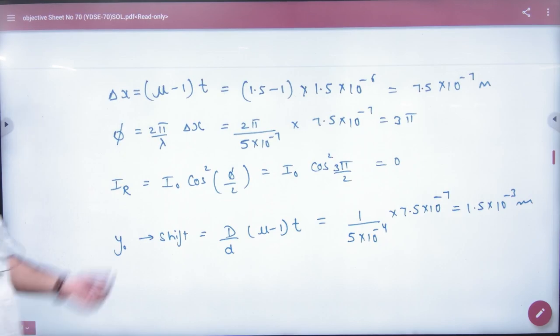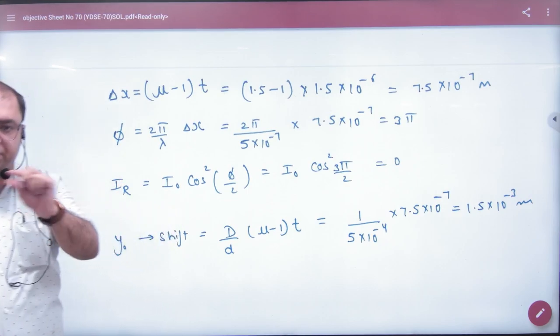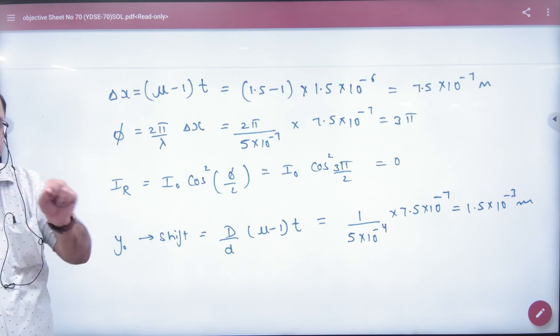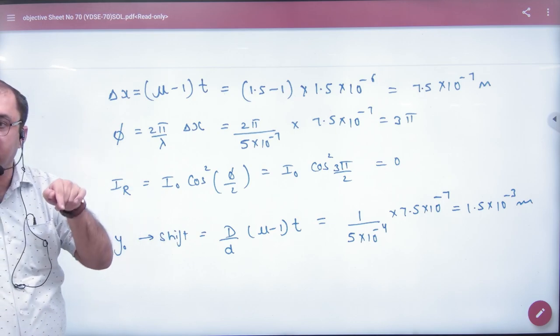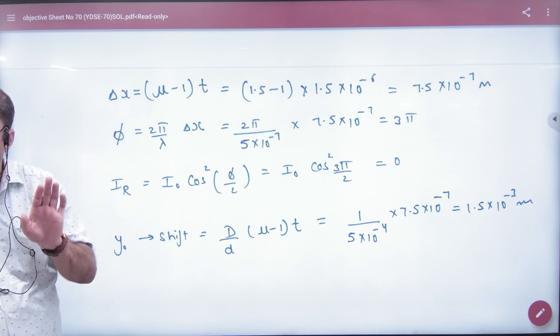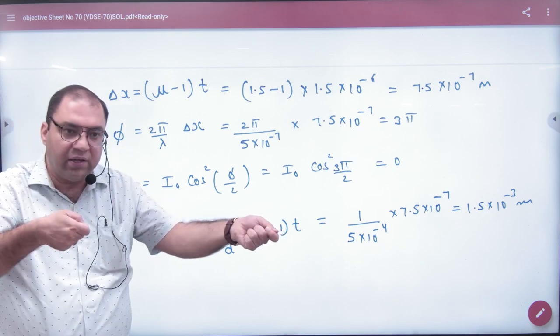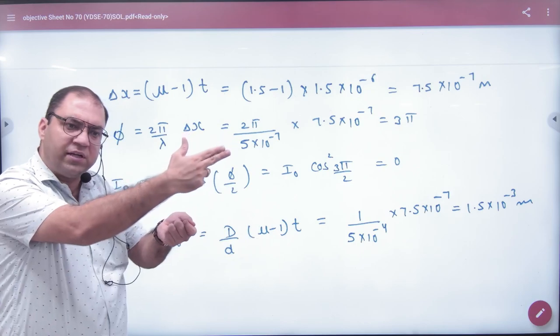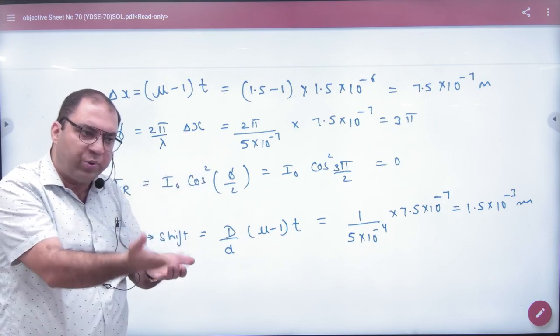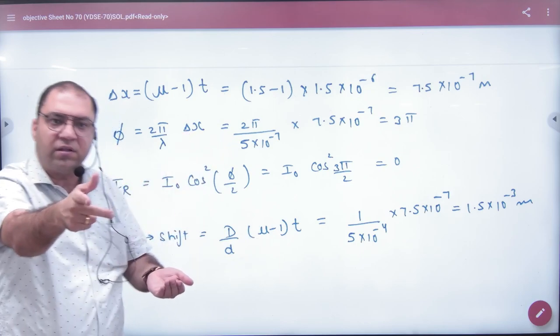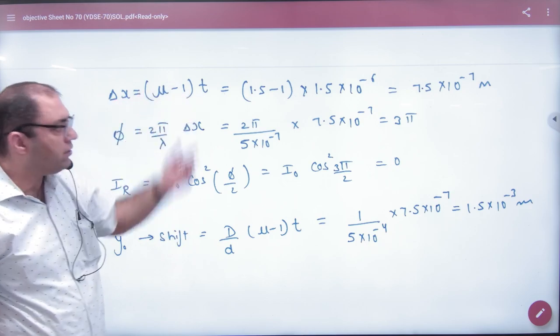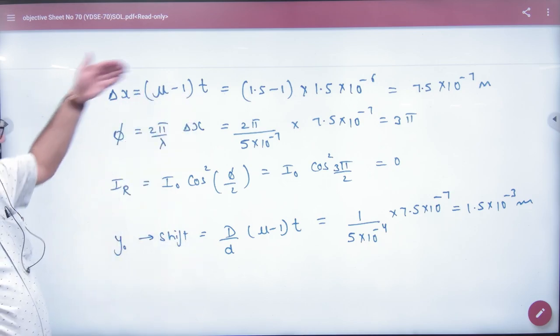So I know that the Δx is shift, path difference. After putting slab, what will happen? Optical path, μ into t cover. That's how it had to cover, t cover. Glass slab's thickness is t. If it is vacuumed, then t goes straight. But because of glass slab, μ into t. So shift, i.e., extra distance wave has traveled so much, μt minus t, i.e., (μ-1) into t. So this extra path covered.